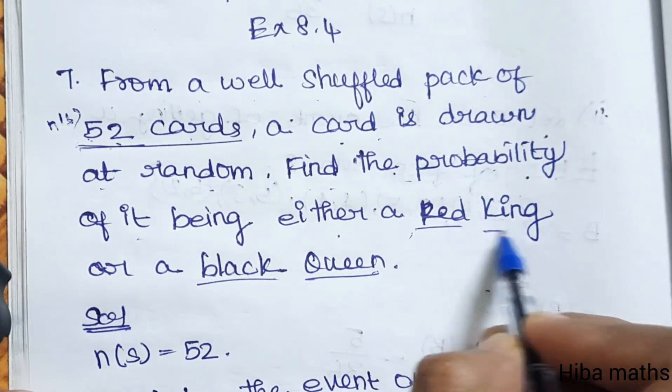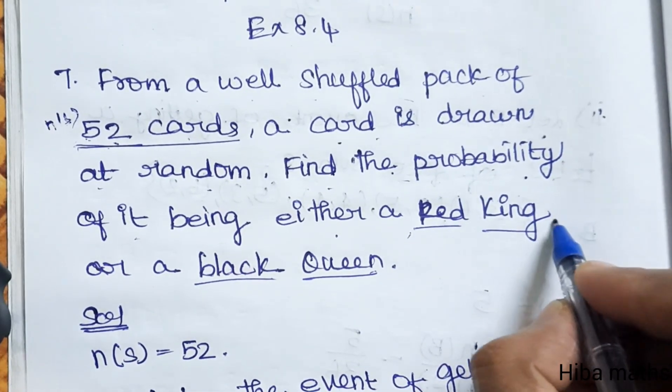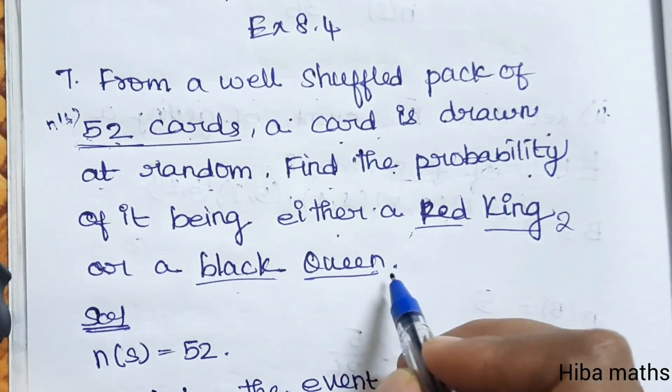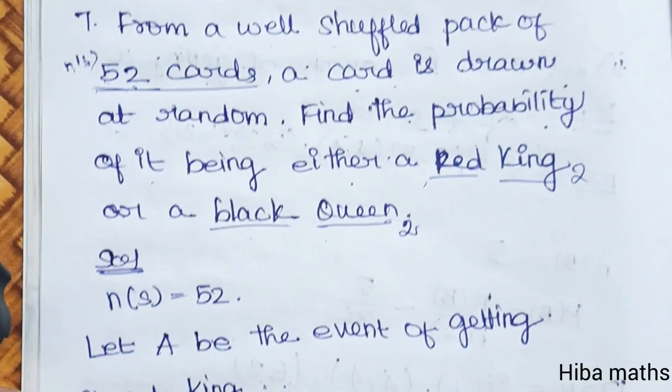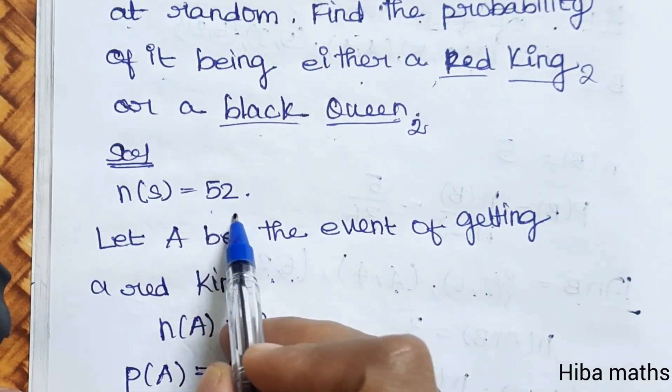One red color is a king, red color is a red king, and black color is a black queen. So these two possibilities are available. N(S) is 52.